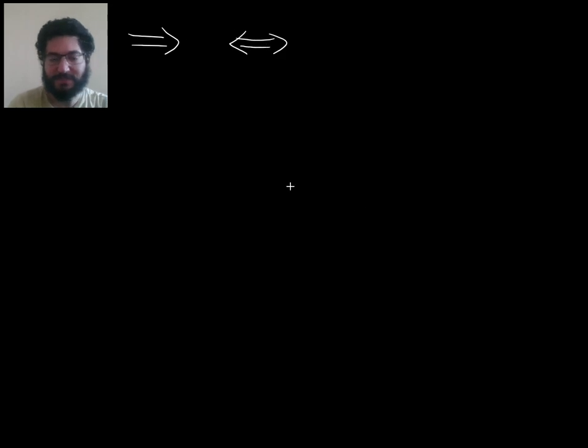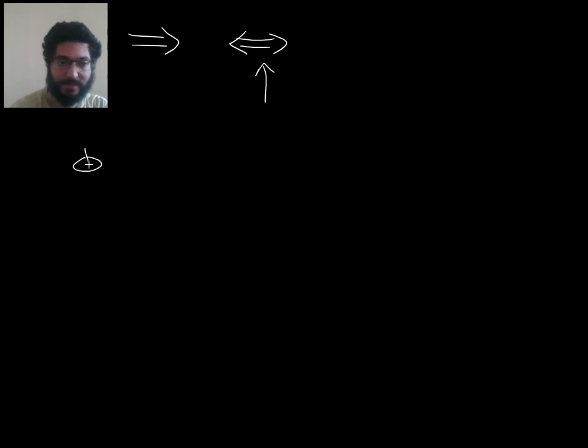Let's talk about the truth tables for these two new friends, implication and equivalence. I want to focus on the one for equivalence first because that will be simpler to understand, I think.